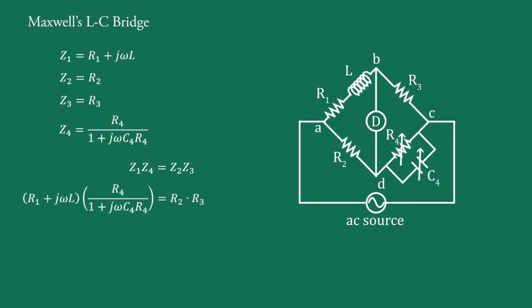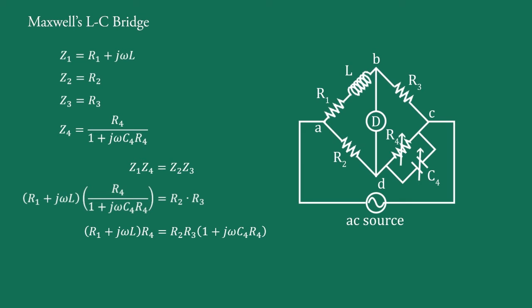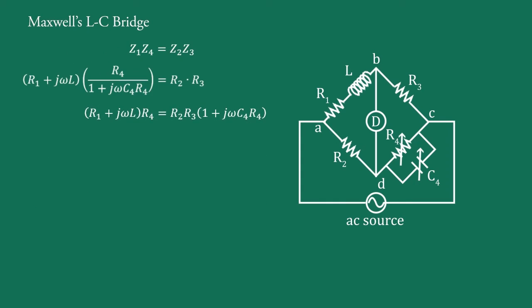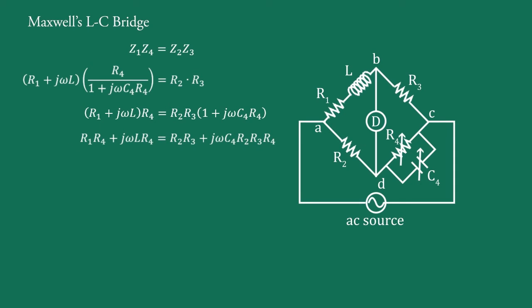Simplifying by transferring the denominator to the right hand side, we have (R1 plus jωL)·R4 equals R2·R3·(1 plus jωC4·R4). Expanding the brackets we get R1·R4 plus jω·L·R4 equals R2·R3 plus jω·C4·R2·R3·R4.